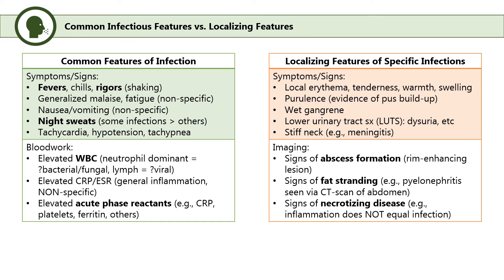Localizing features hint to a specific infection — for example, warmth, erythema, and tenderness for a skin and soft tissue infection, or lower urinary tract symptoms like dysuria, frequency, and suprapubic heaviness for cystitis. Diagnostic imaging findings can also be indicative, such as rim-enhancing lesions for abscesses or fat stranding on CT scans of the kidney for pyelonephritis. No single feature is enough to confirm infection, and when features are discordant, a good clinician should be able to justify their gestalt judgment on the probability of true infection.